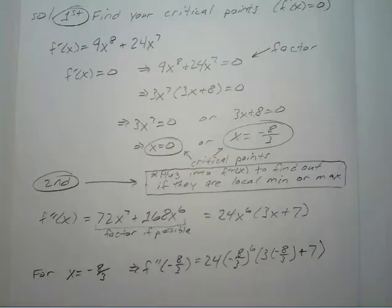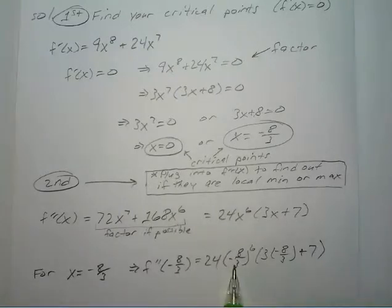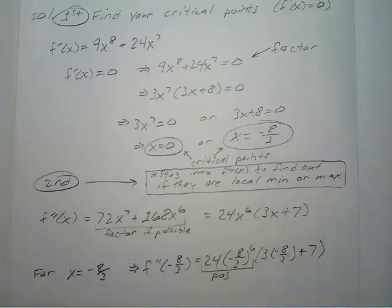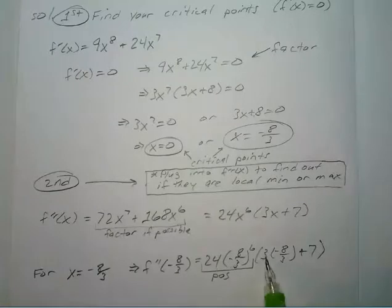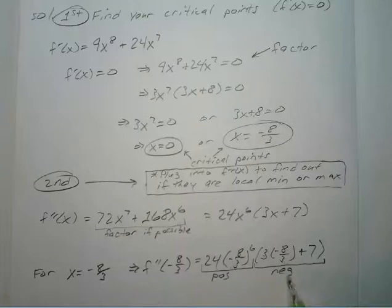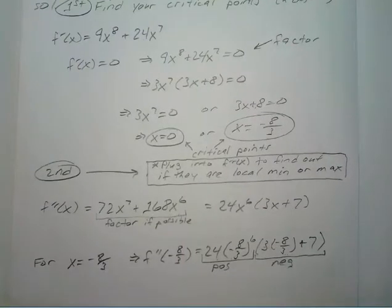All you have to do is find out if this is going to be positive or negative. If you have negative 8 over 3 multiplied to itself 6 times, you'll end up with a positive. So you have a positive times a positive — this is positive. For the second factor: 3 times negative 8 over 3, the 3s cancel, giving negative 8 plus 7, which is negative 1. So this factor is negative.